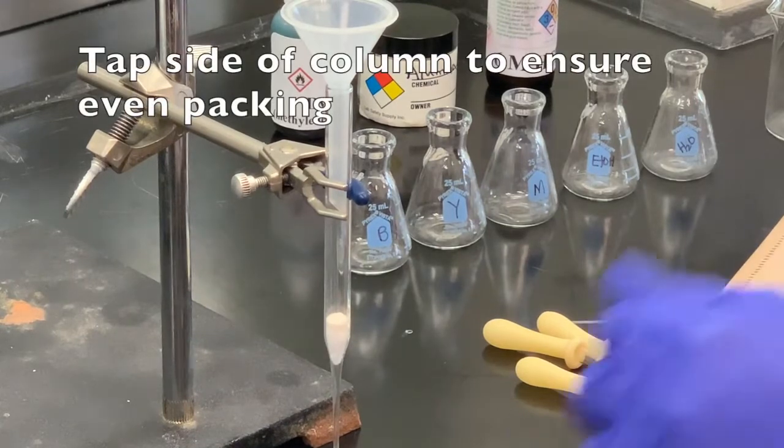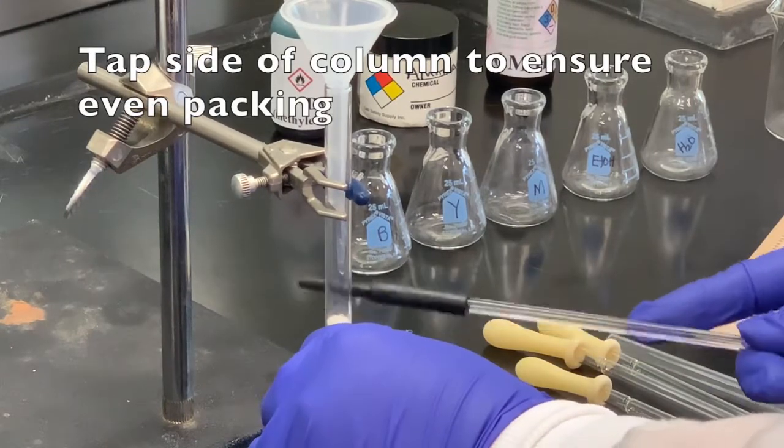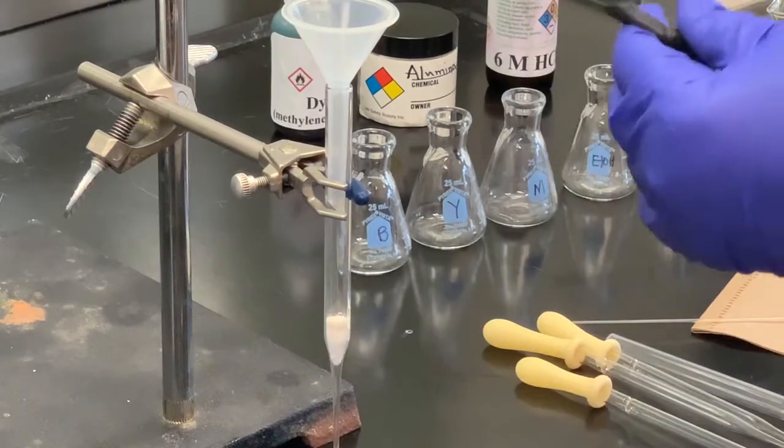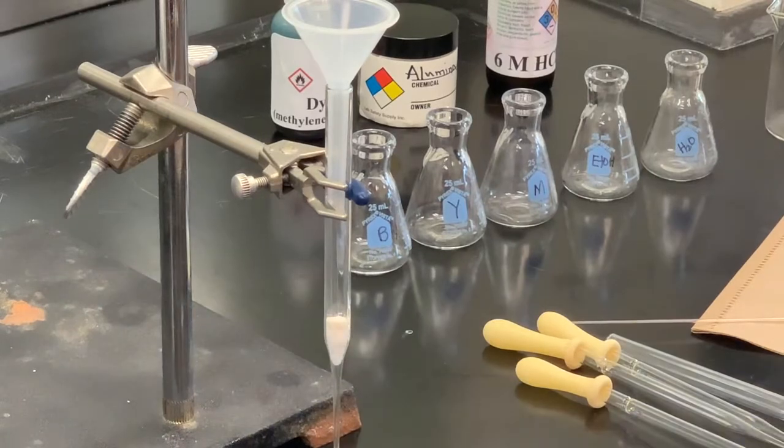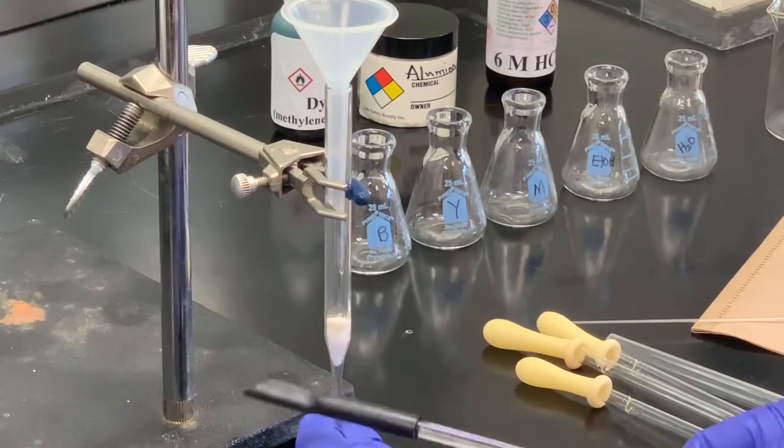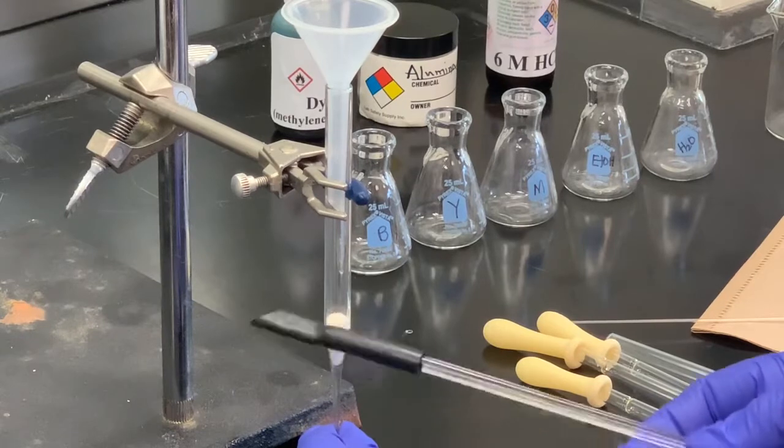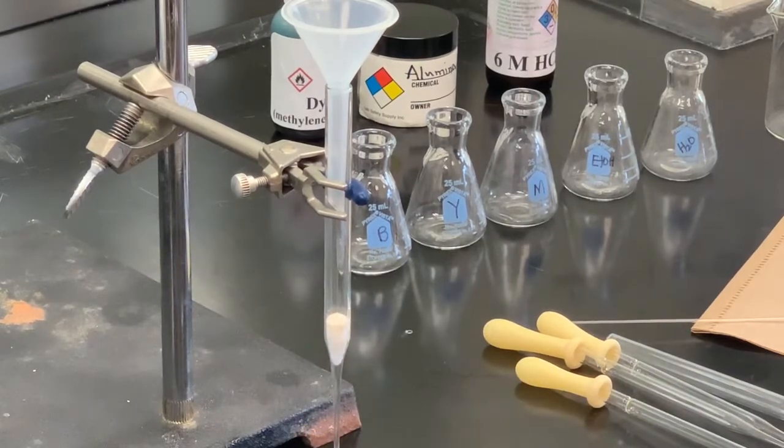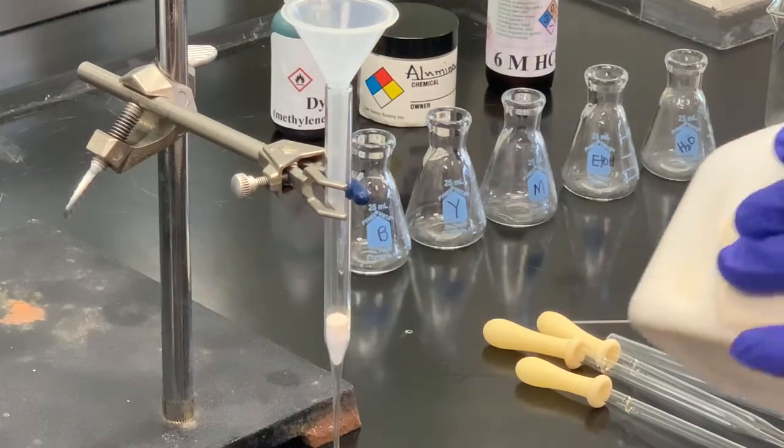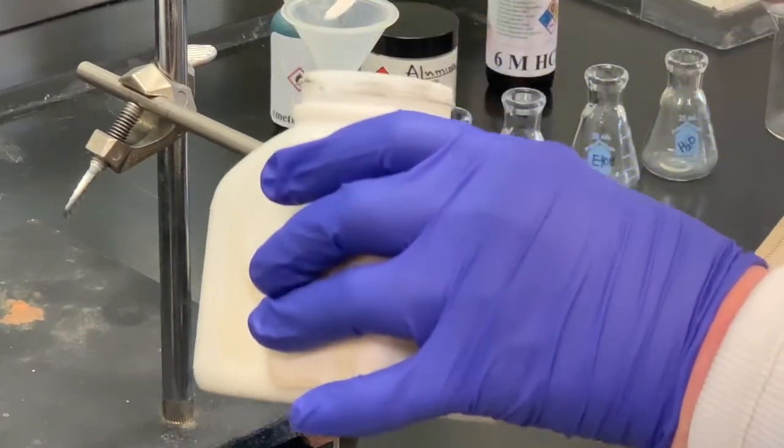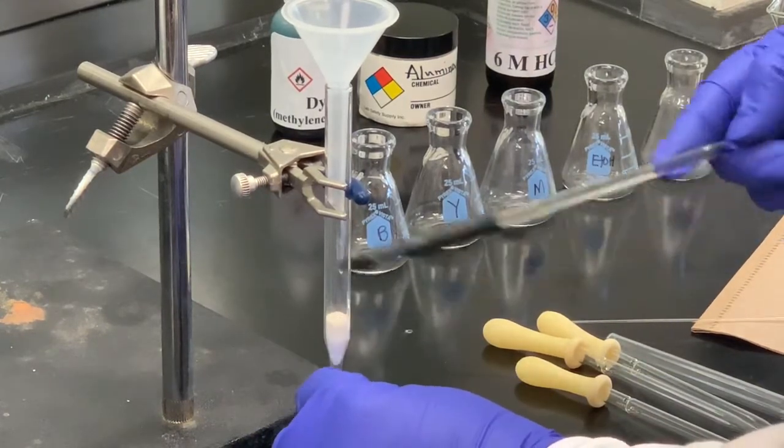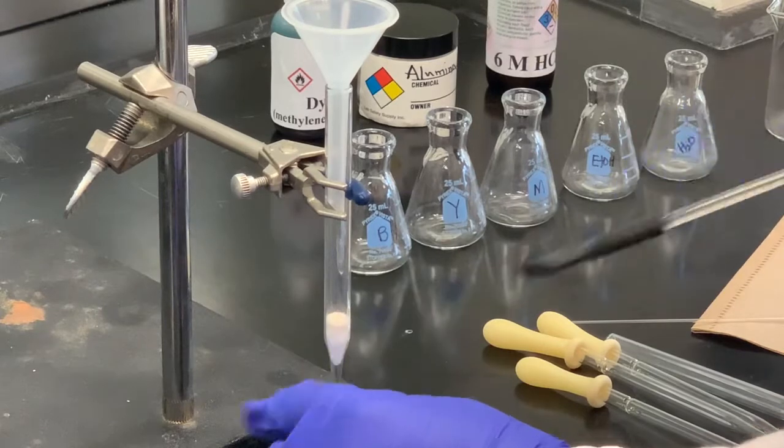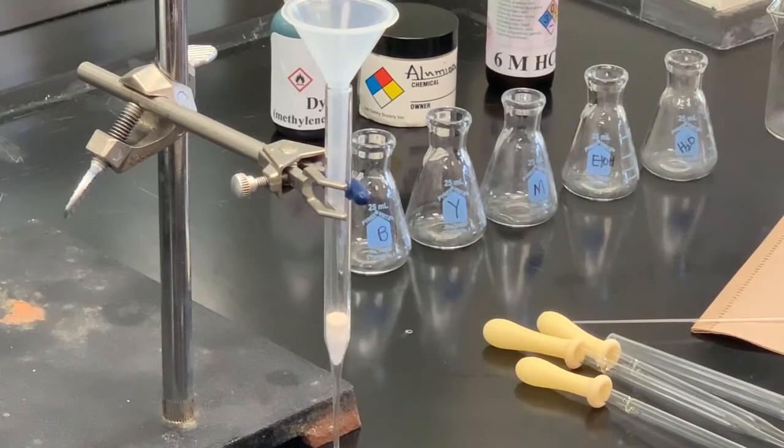And every time we add something, we want to give it a tap. I'm using the rubber policeman on a stirring rod. You could certainly use a piece of rubber tubing. And we just want to make sure that's a little more level. And I think I'm going to add just a little bit more sand. I think that looks pretty good. I'll leave that as it is.